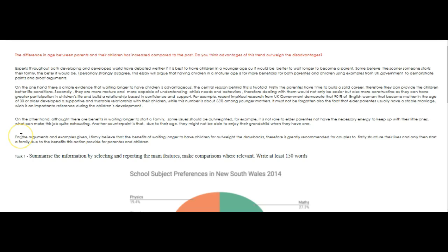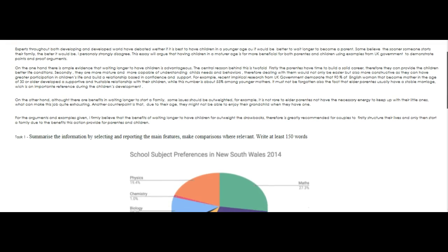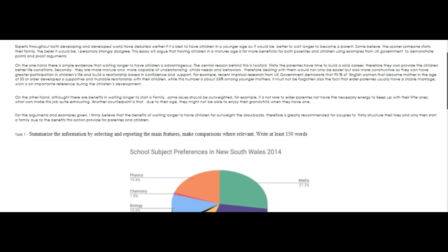From the arguments and examples given, I firmly believe that the benefits of waiting longer to have children far outweigh — no T — the drawbacks. Therefore, it is greatly recommended for couples to, firstly, structure their lives and only then start a family due to the benefits this action provides — with an S — for parents — no E — and children. What you needed to do, however, Flavia, was reverse the order of these paragraphs. Since this is the one that you side with more, it has to go second. This one has to go first. Also, there are spelling errors all over the place, like in every sentence, and that's really distracting for the reader. Please try to be more aware of the spelling and try to correct it.